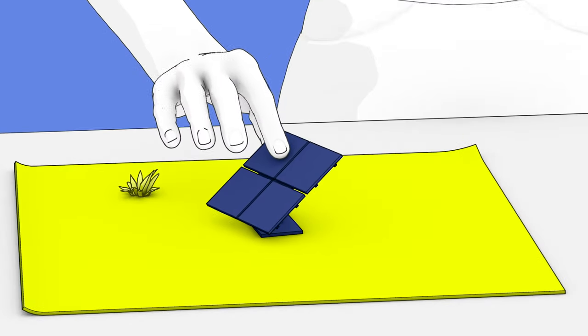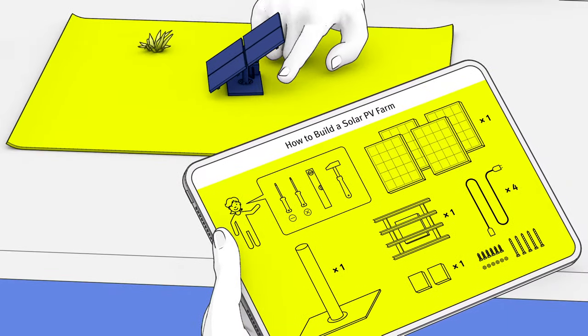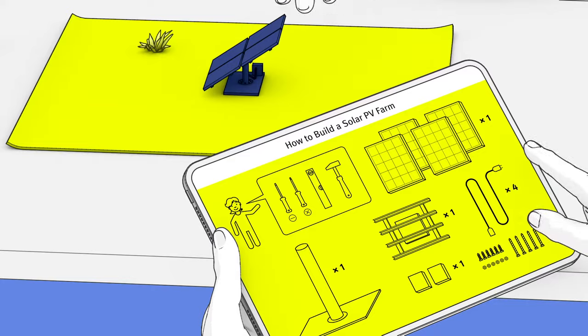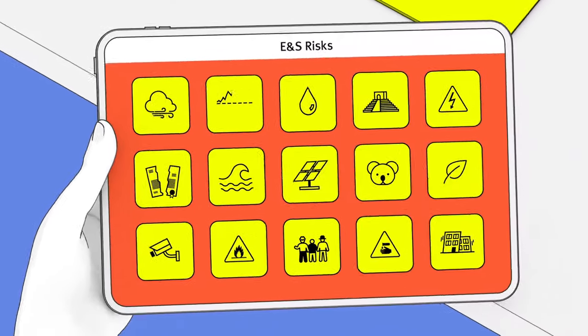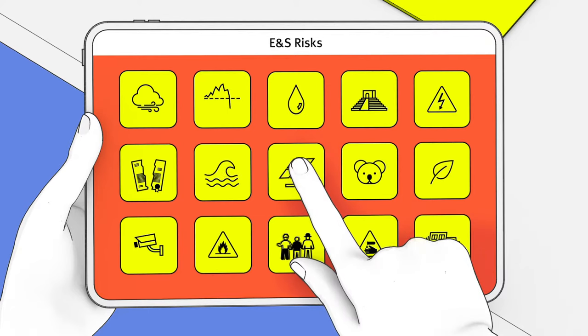While planning and building a solar PV farm, it is important to have an assessment plan to mitigate all the environmental and social risks involved. Let's see what some of the risks and inconveniences are and some possible solutions.